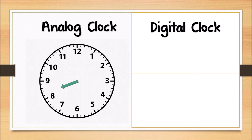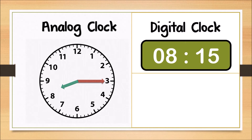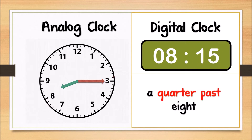The hour hand is pointing to a number between 8 and 9. The minute hand is pointing to number 3. The digital clock shows 8 for the hour and 15 for the minute. We say this time as a quarter past 8. A quarter past 8 means 15 minutes after 8.